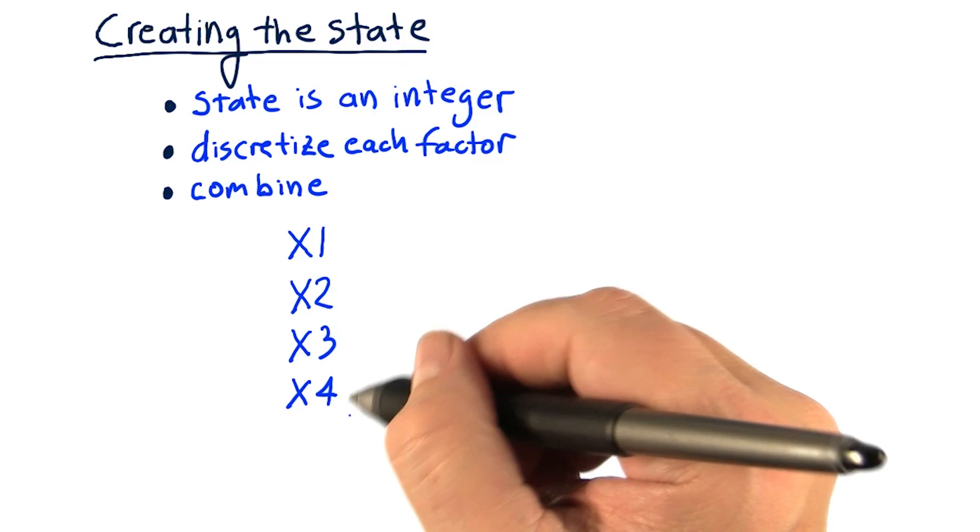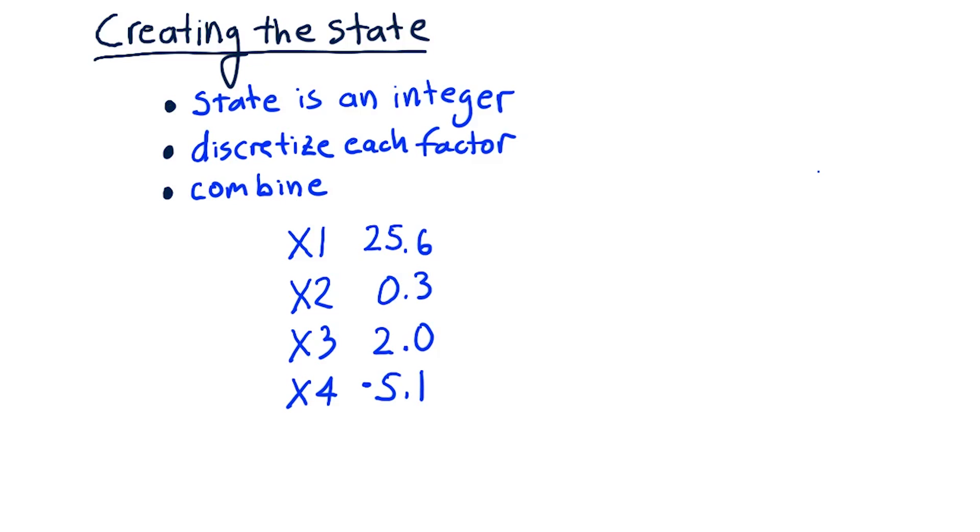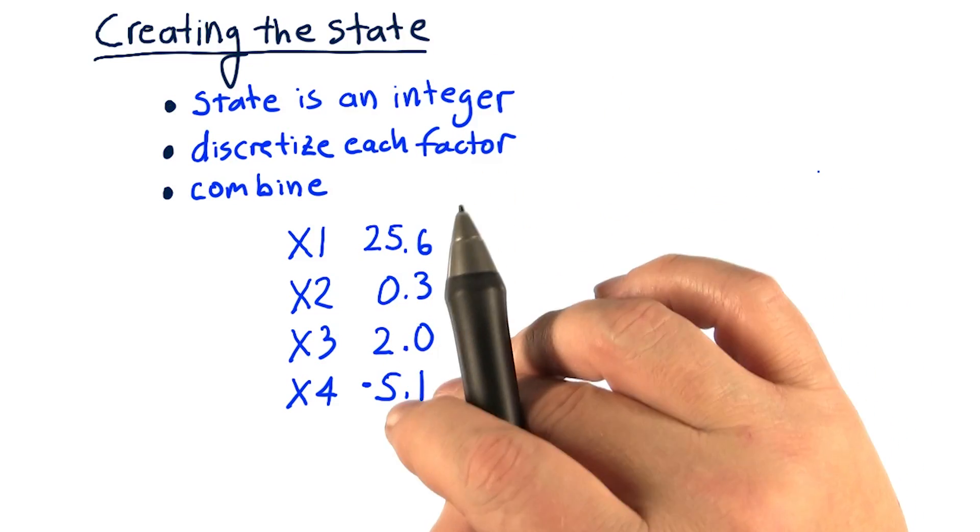So consider that we have four factors and each one is a real number. We have separately beforehand figured out how to discretize each one of these factors.